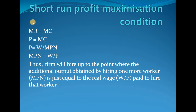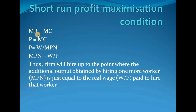The short-run profit maximization condition — marginal revenue equal to marginal cost — holds for all market forms. For example, if employing one more worker costs 50 rupees in marginal cost but generates 100 rupees in revenue, it pays the firm to keep hiring additional labor. The firm keeps hiring as long as marginal revenue exceeds marginal cost, and stops only when the two are equal.